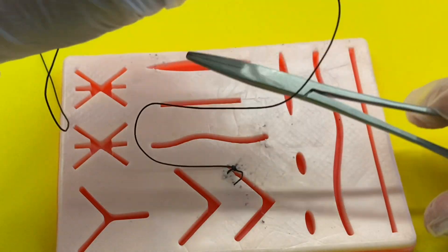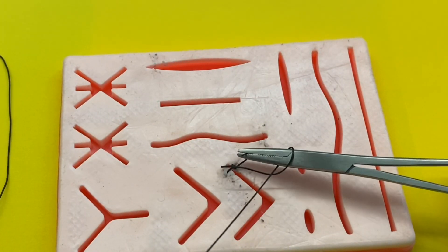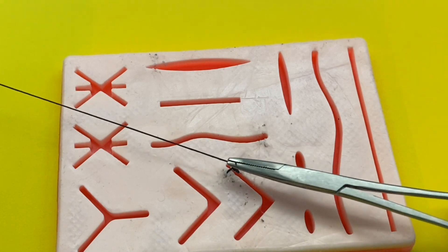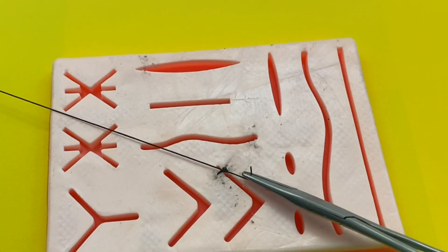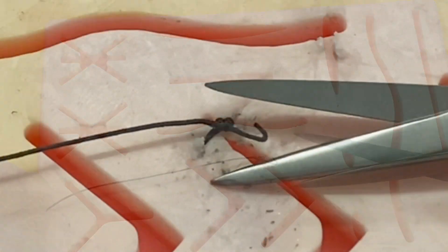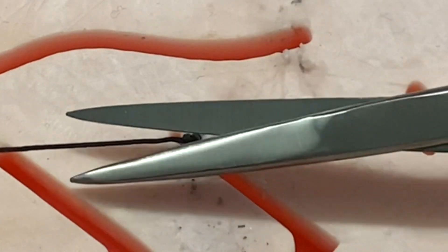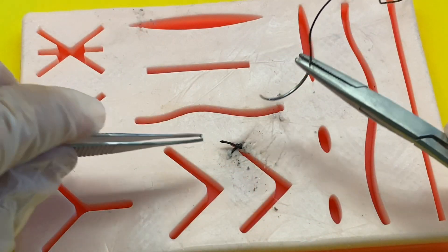For practice purposes, you want to do a couple more throws, which means make a couple more knots. After you have practiced two to four throws, you can get your scissors and cut off the excess thread. And make sure you have a little bit left over on each stitch. And then you're going to get ready to do this all again.